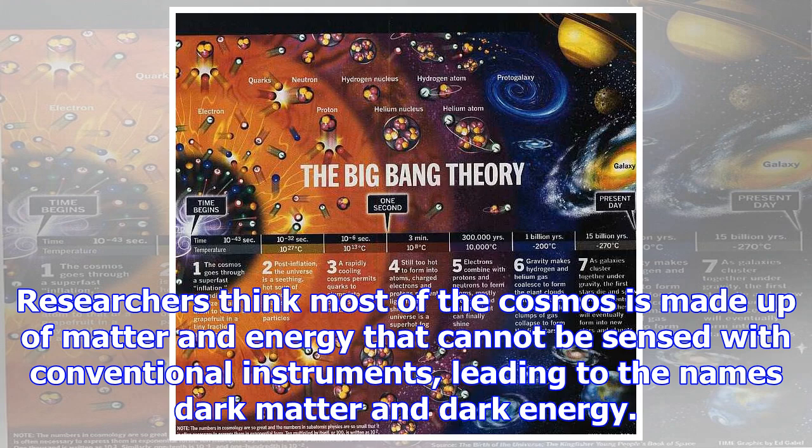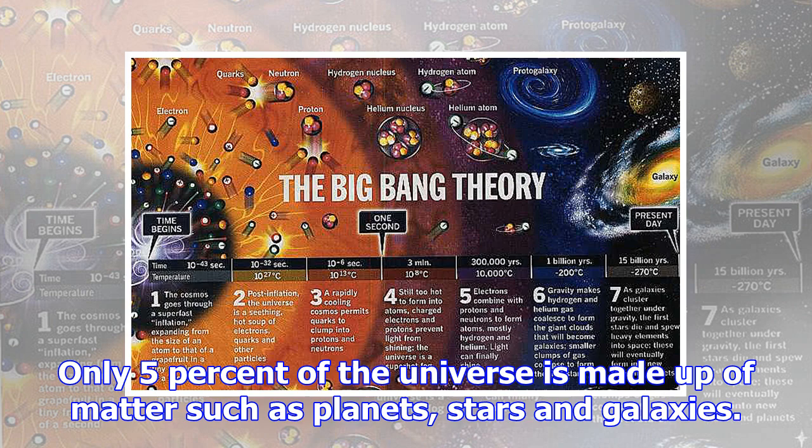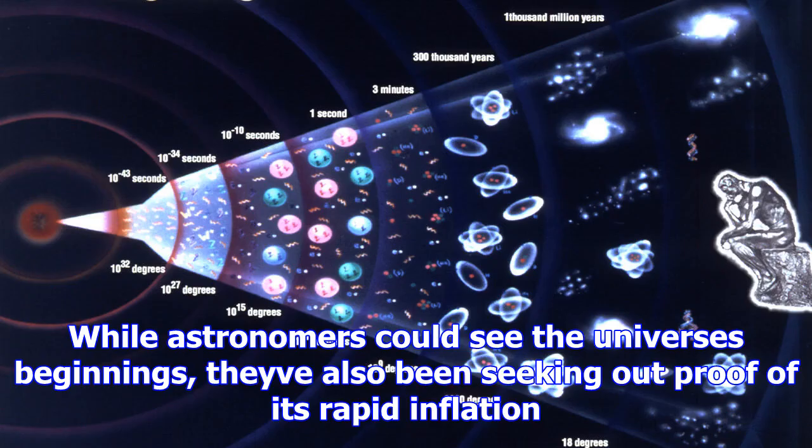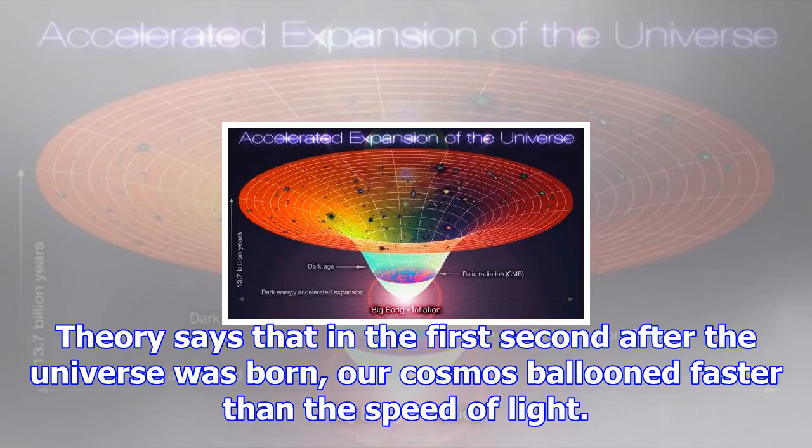Examining the CMB also gives astronomers clues as to the composition of the universe. Researchers think most of the cosmos is made up of matter and energy that cannot be sensed with conventional instruments, leading to the names dark matter and dark energy. Only 5% of the universe is made up of matter such as planets, stars and galaxies.